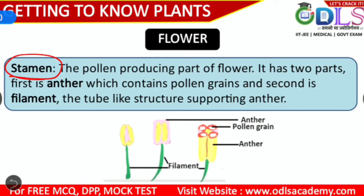The reproductive part of the flower — the pollen grain — is the main part of the flower. The pollen grain is the first part of the flower involved in reproduction.